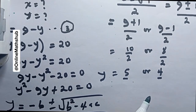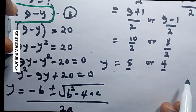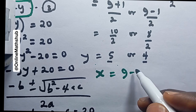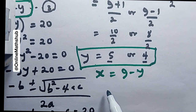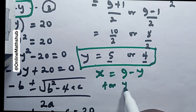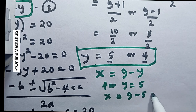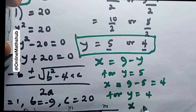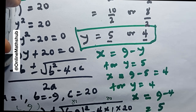Now that we have y, we go back to equation 3: x equals 9 minus y. For y equal to 5, x equals 9 minus 5, which equals 4. For y equal to 4, x equals 9 minus 4, which equals 5.